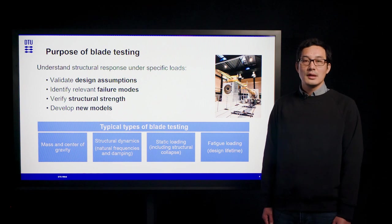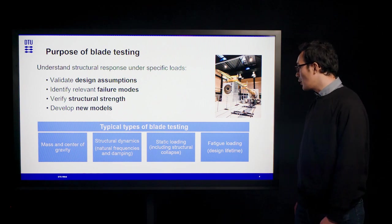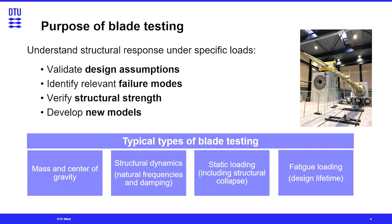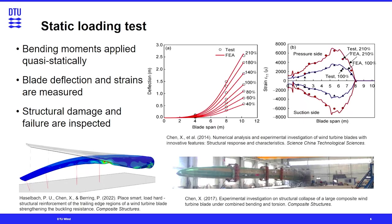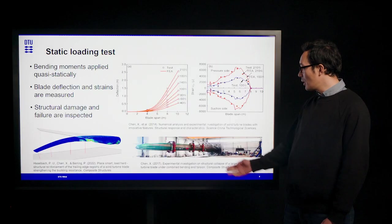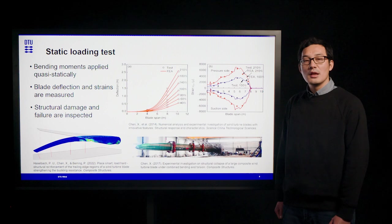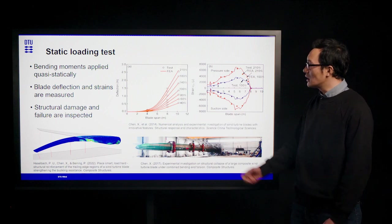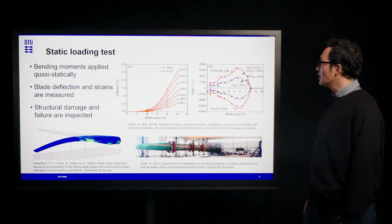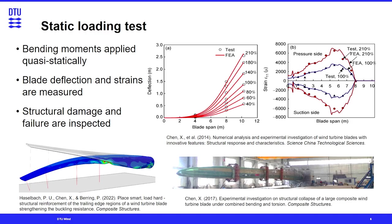Static loading includes the structural collapse test, and fatigue loading is to evaluate the structural design lifetime performance under cyclic loads. In the static loading test, bending moments are applied statically to the blades by pulling the blade. During the test, blade deflection and strength are measured and compared with design values, which are usually calculated from finite element simulation. As you can see in this figure, the test results and FE simulation results match quite well. Structure damage and possible failure are inspected so that design evaluation can be done afterwards.